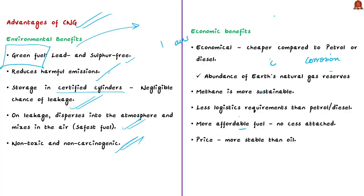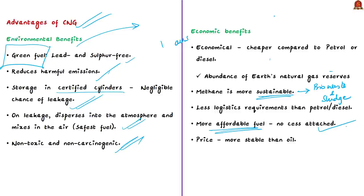CNG is cheaper compared to petrol or diesel because earth's natural gas reserves are found in abundance relative to depleting fuels like petrol and diesel. Methane, the main component of CNG, is more sustainable since it can also be created from biological waste and sludge. The logistics requirement for CNG is comparatively lesser, and there is no cess attached to CNG like petrol or diesel, making its price more stable than oil.